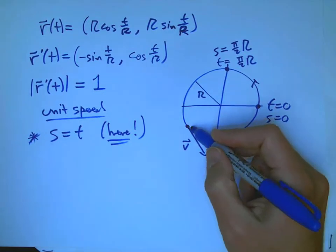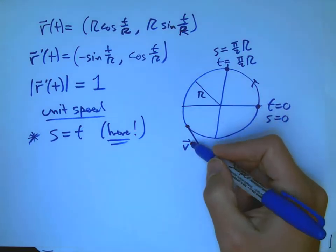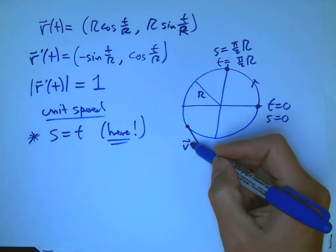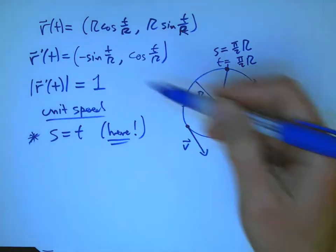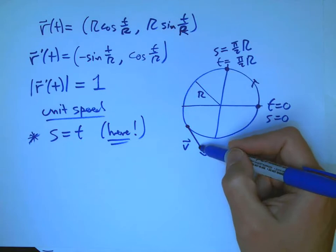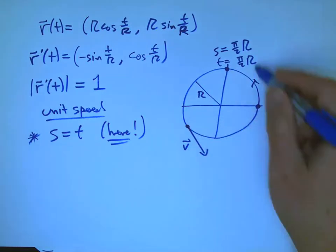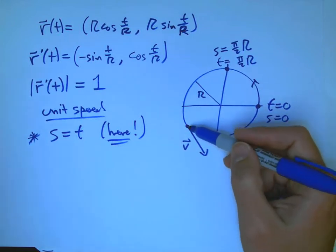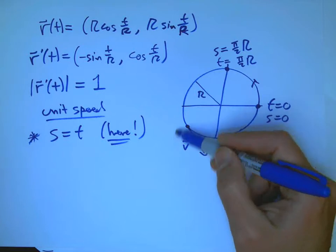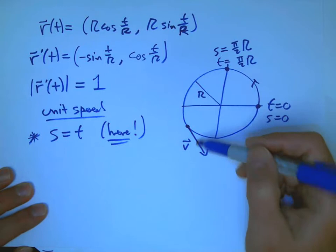Now, direction information is encoded by the velocity, but one important thing is that in general, the velocity has two pieces of information. It's how fast you're going, which is the magnitude of the velocity, which is the speed, and the direction information. And in general, we don't want to pay attention for this kind of problem. We don't want to pay attention to how fast you're going. That's something that's an artifact of the parametrization. And we'd like to pay attention only to the direction information.